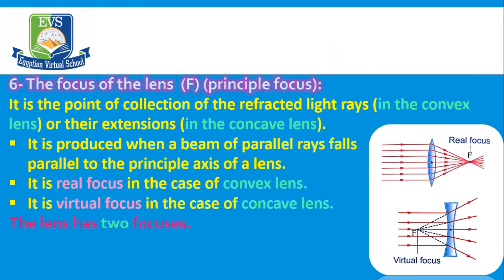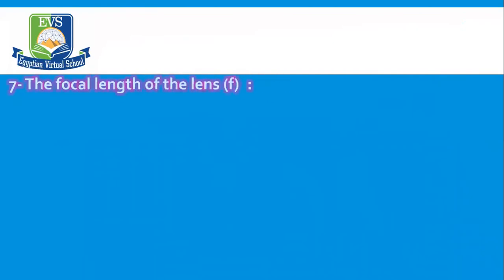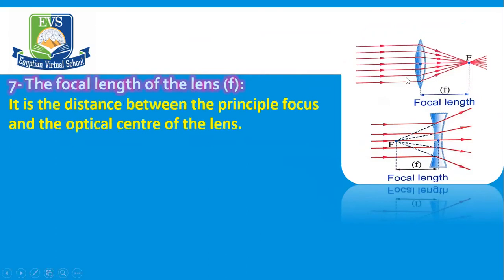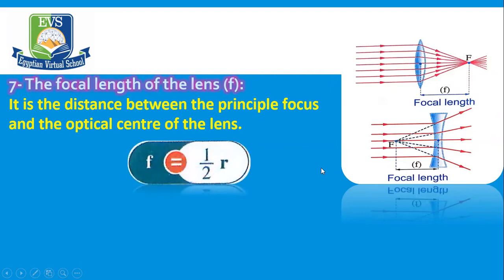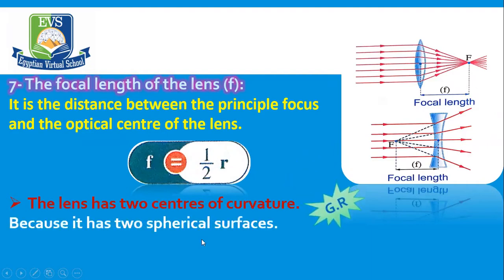The lens has two focuses. Number seven, the focal length of the lens: it is the distance between the focus and the optical center. The relation between the focal length and the radius: the focal length equals half the radius. The lens has two centers of curvature — give reason — because it has two spherical surfaces.